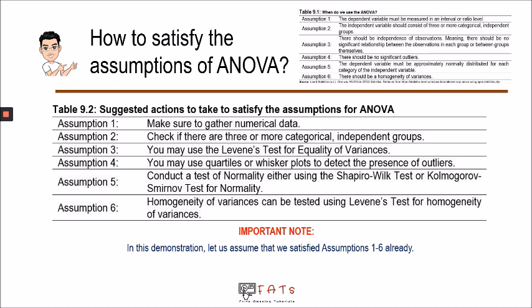For assumption four, since we'll be using Microsoft Excel, you may use box-and-whisker plots to detect outliers. If there are outliers, you can either remove them from the data set or replace them with the minimum or maximum value. For assumption five, conduct a normality test using the Shapiro-Wilk or Kolmogorov-Smirnov test. For assumption six, use Levene's test for homogeneity of variances. In this presentation, let's assume all six assumptions are already satisfied.